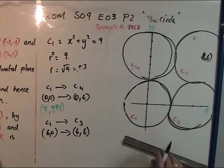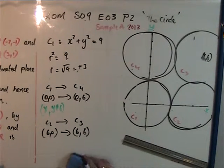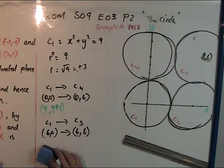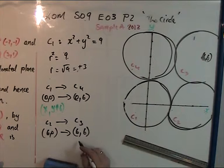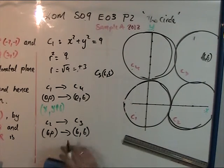You can deduce it if you do it correctly and write it down, but showing the method is better. So the coordinates of C3 is (6,6).